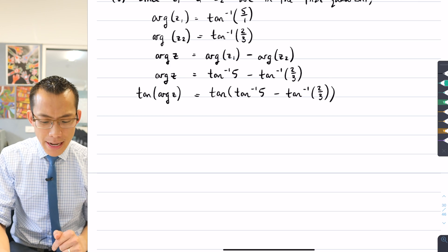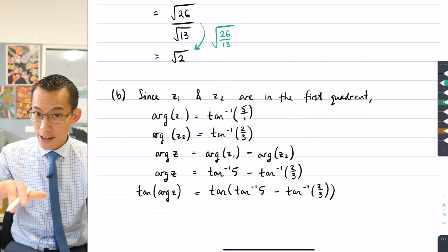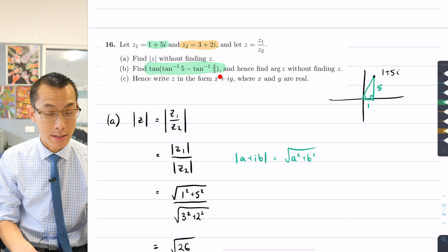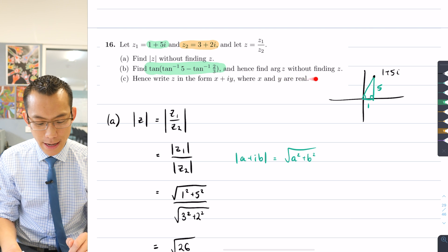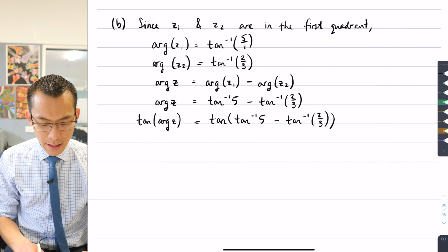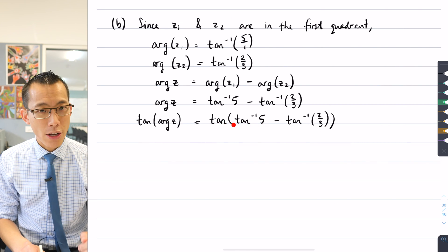As the question has said, we've just taken this run up to get to what the question is asking us: find tan of tan inverse etc., and hence find arg z. In order to do this, we need to recognize that this here is really a compound angle formula.